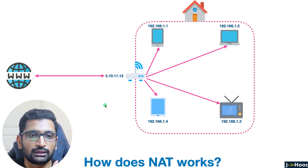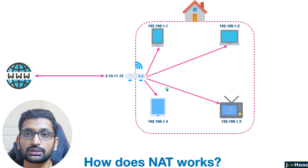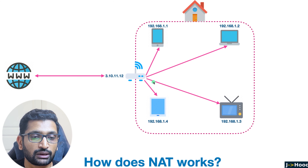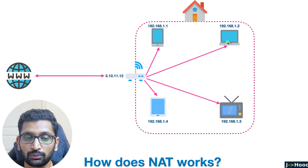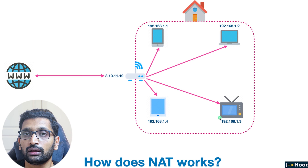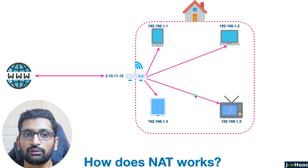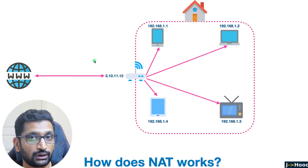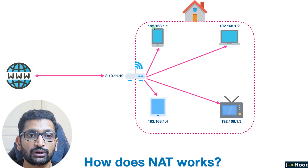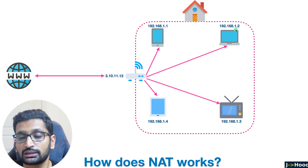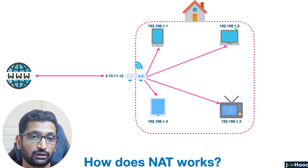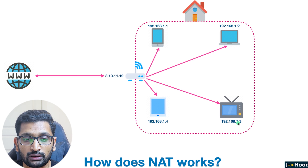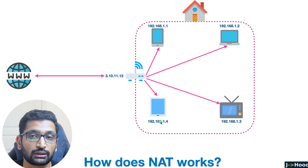The IP address starting with 3.10.11.12 is my public IP address for my router, responsible for giving all household devices internet access. The private IP addresses — assigned to my iPhone, MacBook, iPad, and smart TV — are only visible within my home network and not visible outside. Those IP ranges are like 192.168.1.1, 1.2, 1.3, and 1.4.